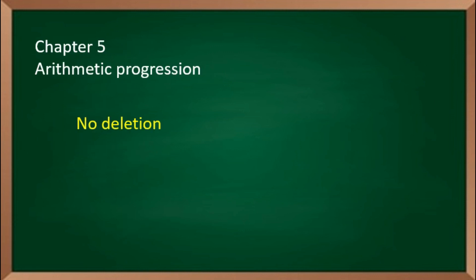Chapter number 5, Arithmetic Progression. AP chapter is full. You have to do the whole chapter. No part is deleted. So you have to focus on that you have to do the whole chapter.